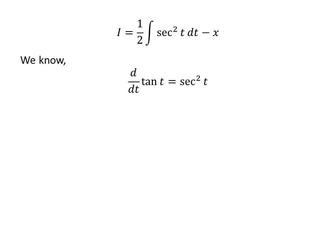We know the derivative of tangent of x is square of sec of x, so tangent of t is the anti-derivative of square of sec of t. Therefore, i is equal to half of tangent of t minus x plus capital C, where capital C is the arbitrary constant of the indefinite integral. Never forget to add this constant at the end of any indefinite integral.